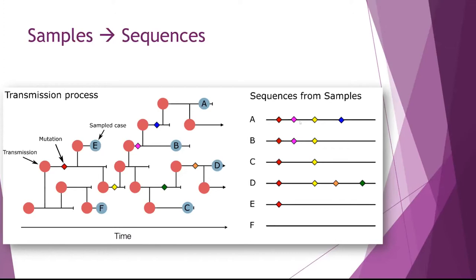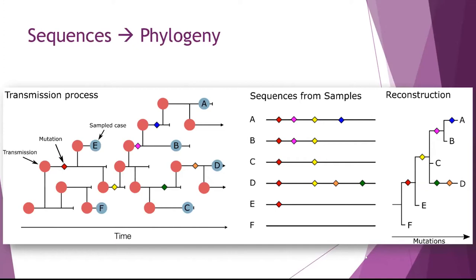We can make a diagram that relates these different relationships, called a phylogenetic tree or phylogeny. This captures that some sequences are more similar and sit closer together, while less similar sequences sit further apart. We can use the mutations to quantify how similar or dissimilar sequences are — if you trace between two sequences, you'll find the total number of mutations that differ between them. This is basically the underlying idea of what we do with these virus sequences.